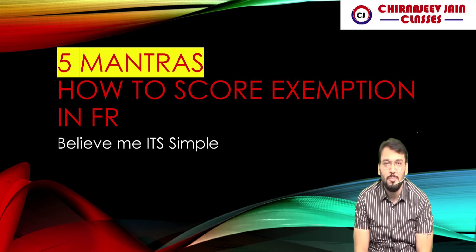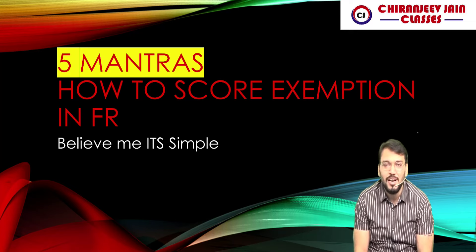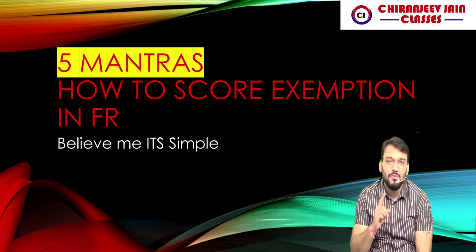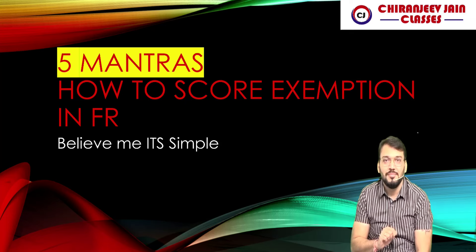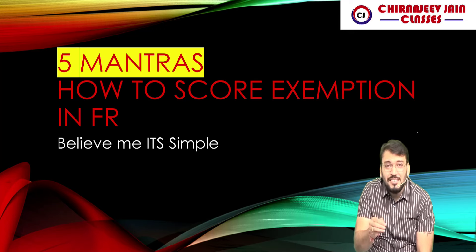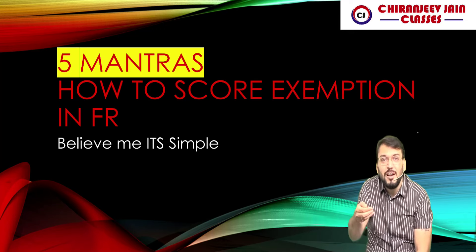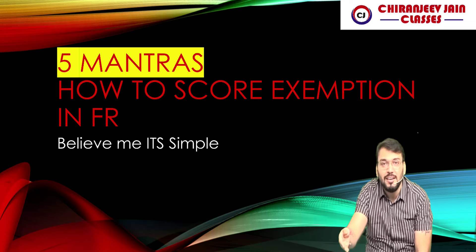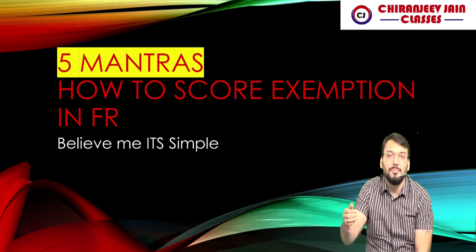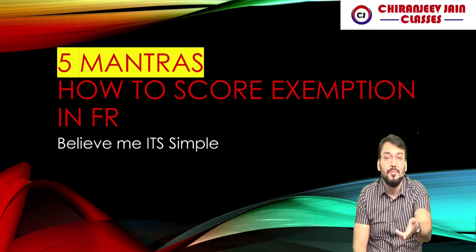I know right now everyone is busy preparing for their upcoming exam in May 2025. There is one important question we need to discuss: how to score exemption in the FR paper. If you score 60 or more than 60 marks in the CA Final Financial Reporting paper, it will be very easy to get an aggregate of 150 marks and pass Group 1.